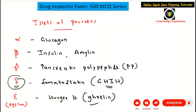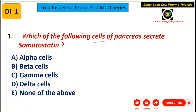Coming back to the question: which of the following cells secrete somatostatin, that is growth hormone inhibiting hormone? The correct answer is definitely delta cells — D choice. Hope you understood the first question. Now let's move on to the second question.